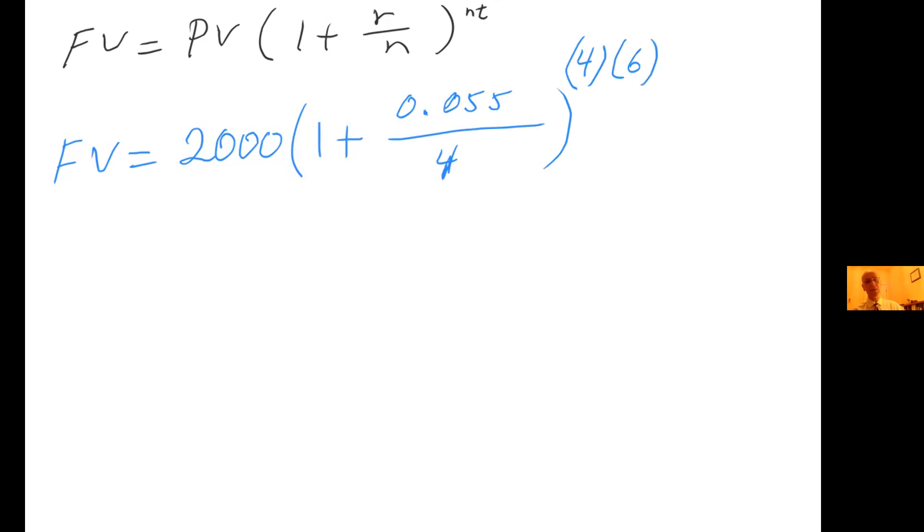Divided by n. We said it's compounded quarterly. There are four quarters in a year. So 4 in here to the power of 4 times 6. I already calculated this. With money, you always want to round to the nearest penny, that is 2 decimals. This gives us $2,775.69.